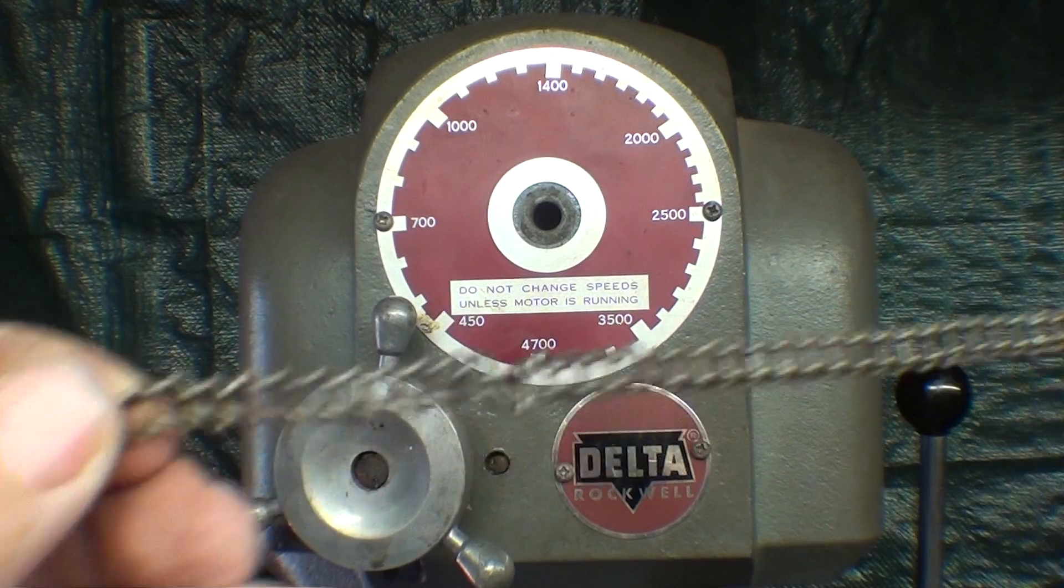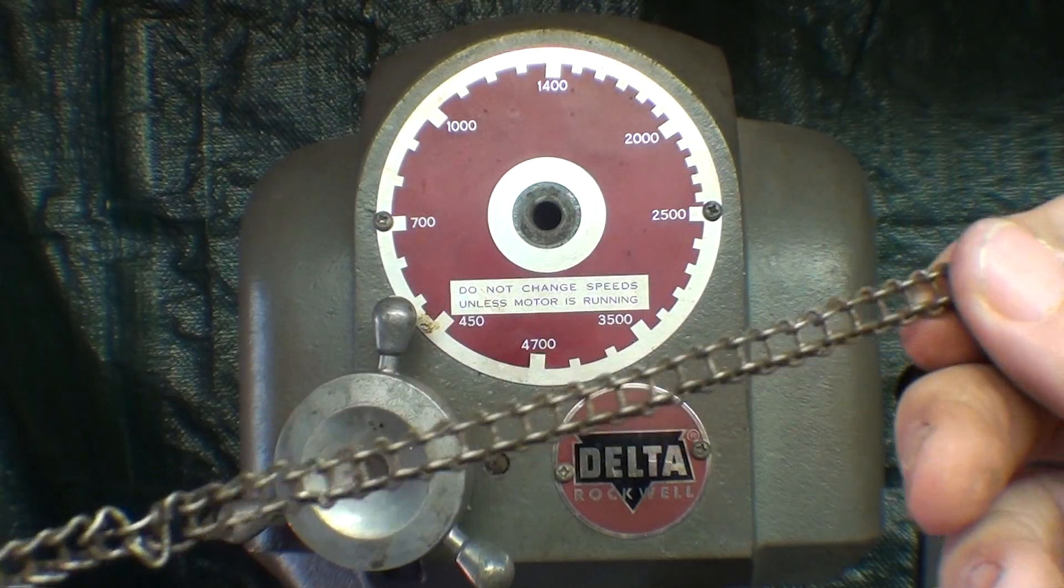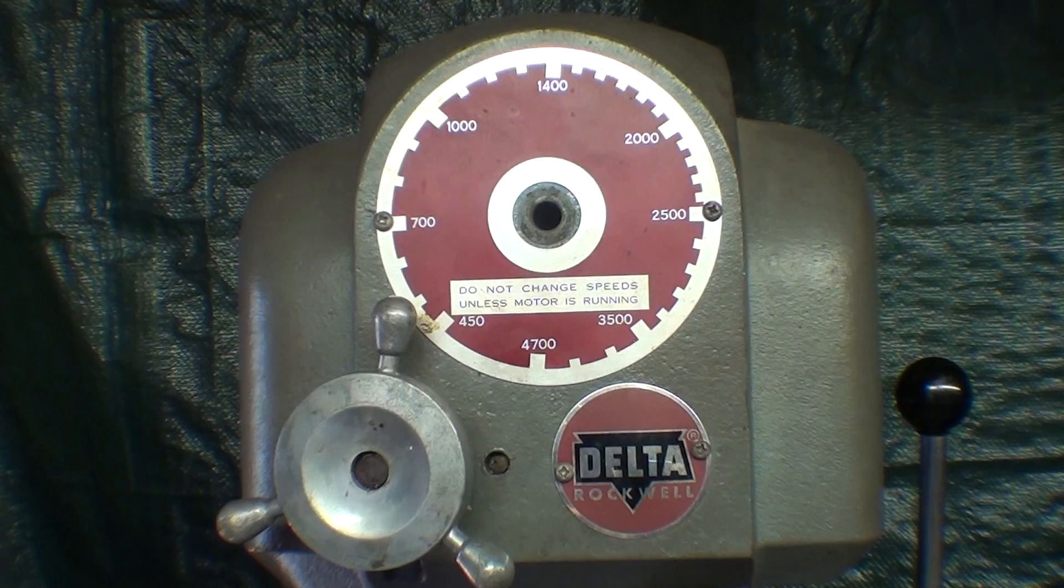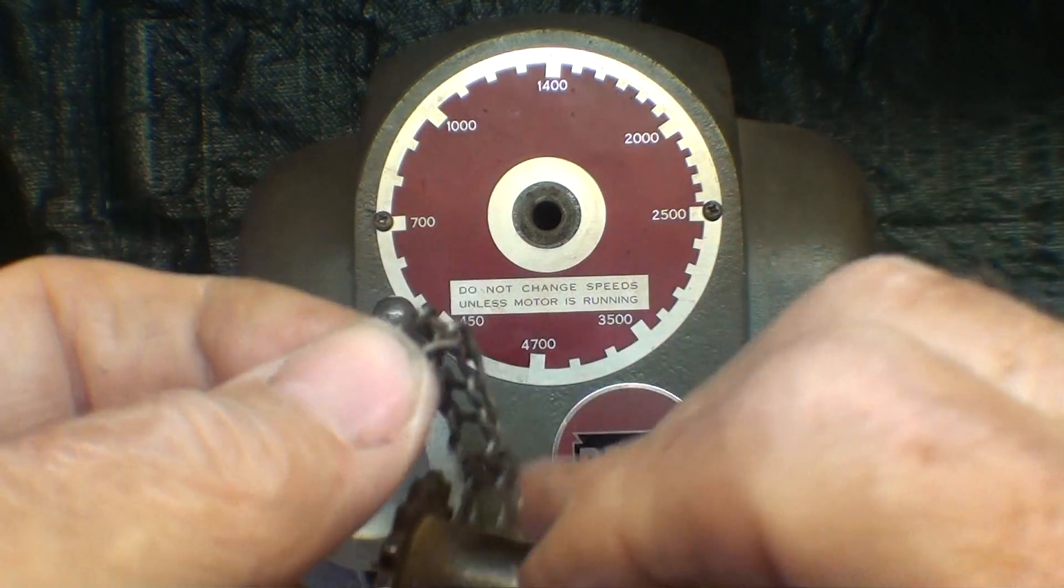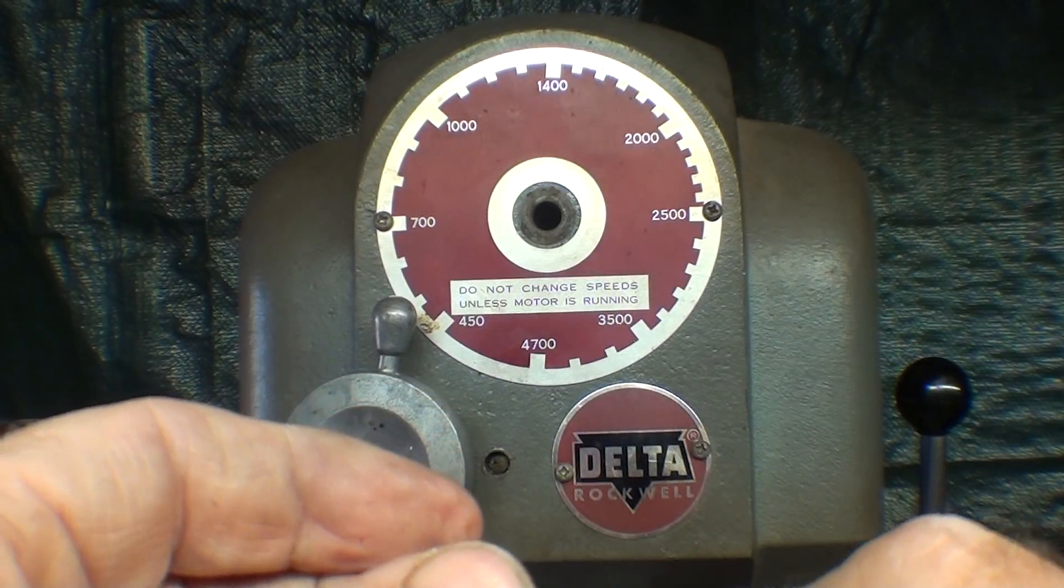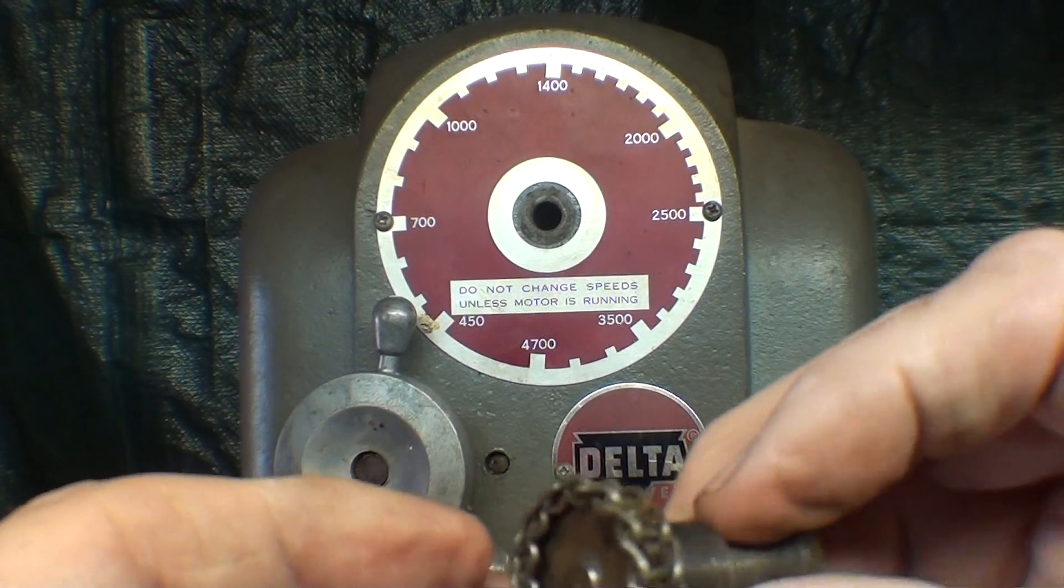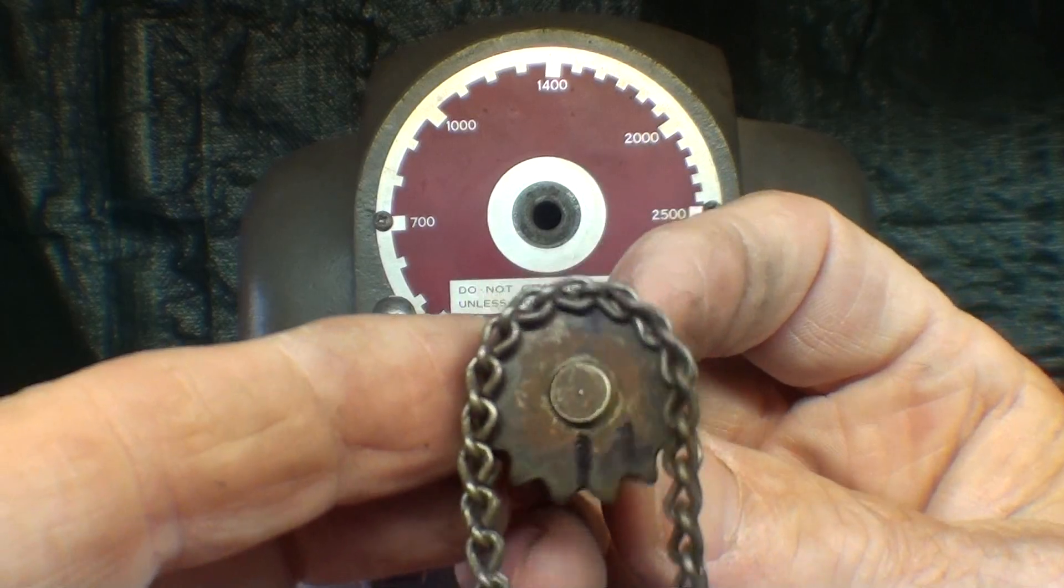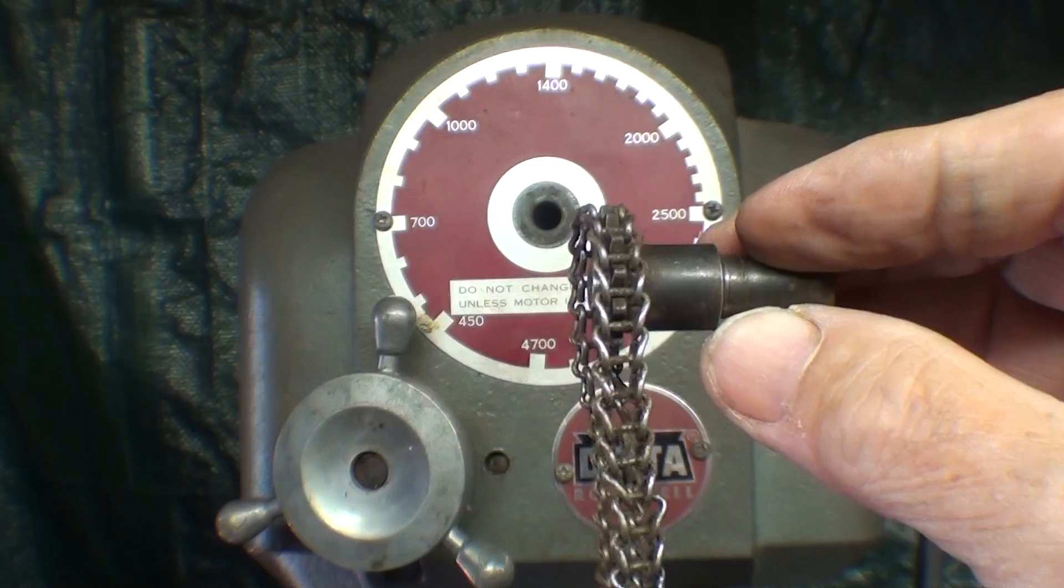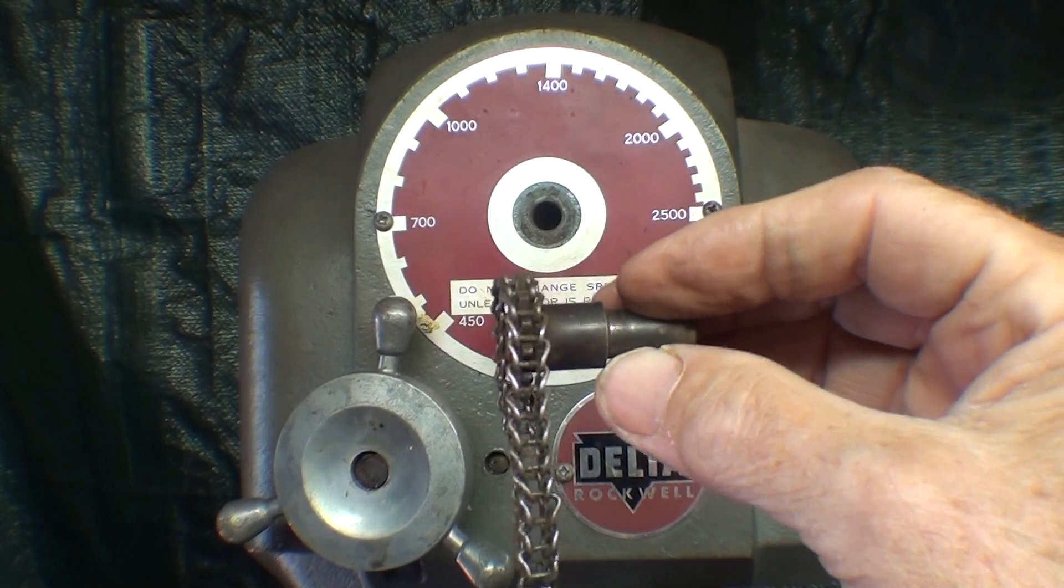So they used the chain and sprocket rather than a belt and rather than gears to connect between this shaft and this shaft. They are not in the same axis. They are perhaps 10 degrees apart, so they needed a little flexibility. But anyway, this chain is broken.